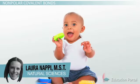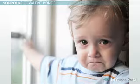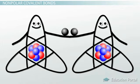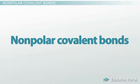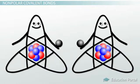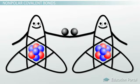Have you ever watched toddlers playing together with a toy? Sometimes they equally share toys, and other times one child takes the other child's toy away. Some types of chemical bonding are very similar to the way that children play with toys. Nonpolar covalent bonds are a type of bond that occurs when two atoms share a pair of electrons, and these shared electrons glue two or more atoms together to form a molecule.